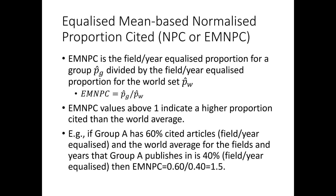For example, if group A has 60% cited articles (field-year equalized) and the world average for the same fields and years is 40% — and the world average must be field-equalized as well — then the EMNPC would be 0.60 divided by 0.40, which is 1.5.